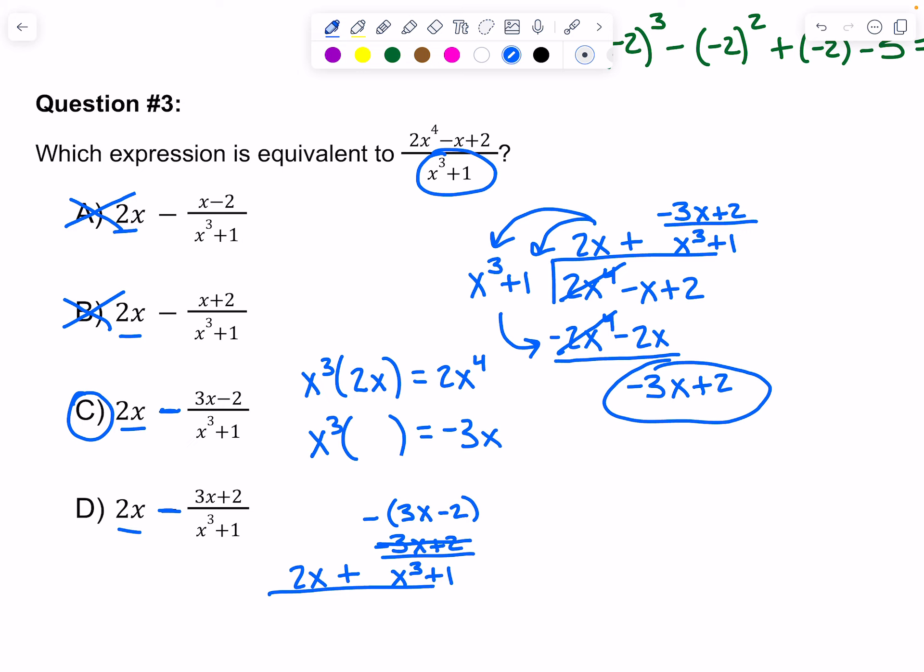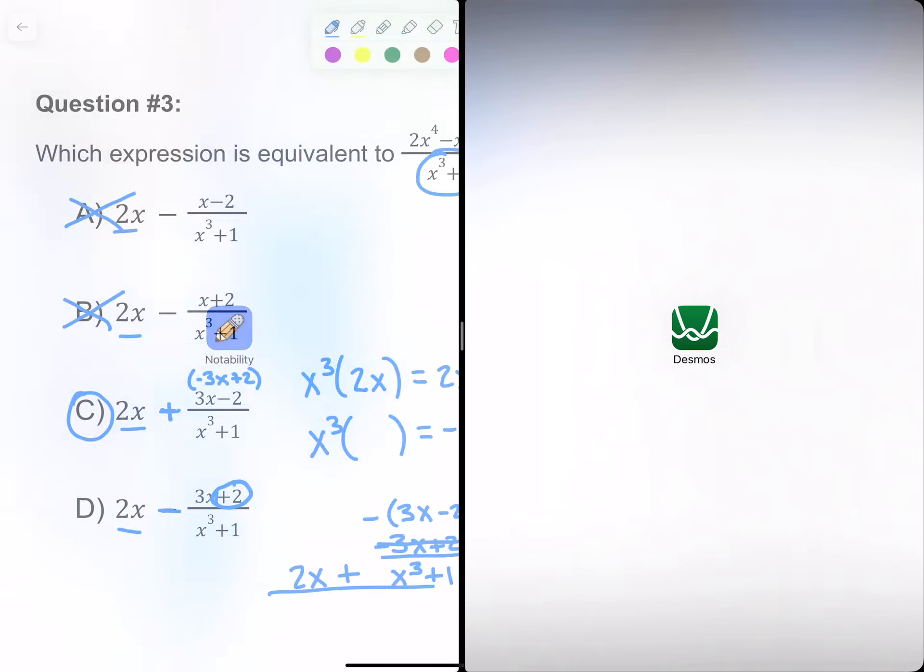It's not a positive 2. That's the part that's a little tricky. You've got to factor out the negative, and that changes it to be a minus 2. Because if you distribute this, it would become negative 3x plus 2. They're just trying to be a little tricky.